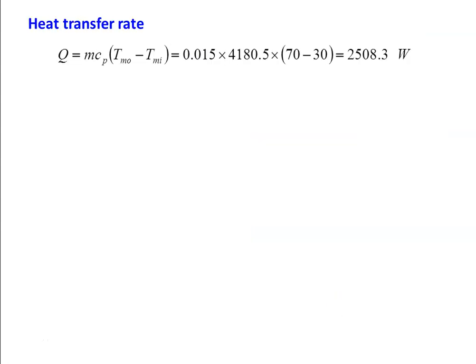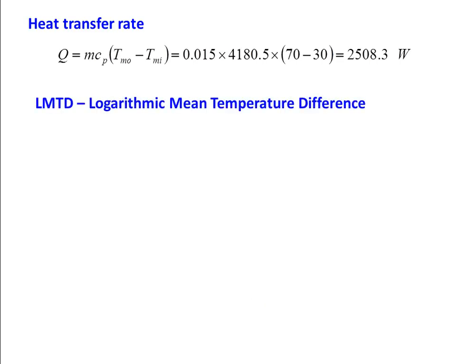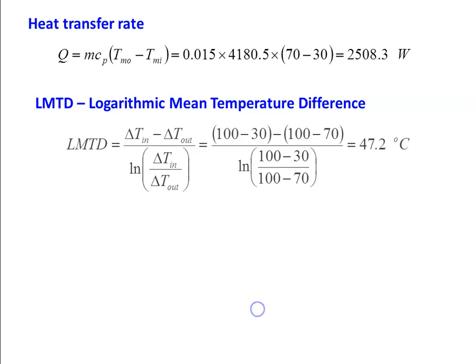The rate of heat transfer: Q = m·Cp·(TMo − TMi), with m = 0.015, Cp = 4180.5, and TMo − TMi = 70 − 30, giving Q = 2508.3 W. Then the logarithmic mean temperature difference (LMTD): LMTD = (ΔTin − ΔTout) / ln(ΔTin/ΔTout). The pipe surface temperature is 100°C; fluid enters at 30°C and leaves at 70°C. So ΔTin = 100 − 30 and ΔTout = 100 − 70.